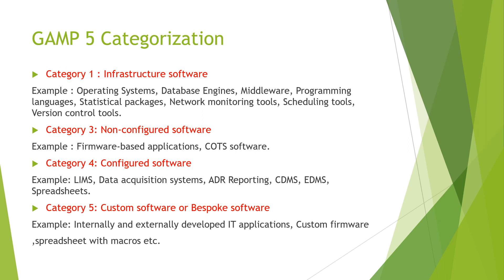Category 3 is non-configured software, also called Commercial Off-The-Shelf (COTS) or ready-made software. It is readily available in the market — you buy it from the vendor, implement it in your company, perform CSV for the system, and use it with no configuration required. Examples of Category 3 laboratory software include Chromeleon and Empower.